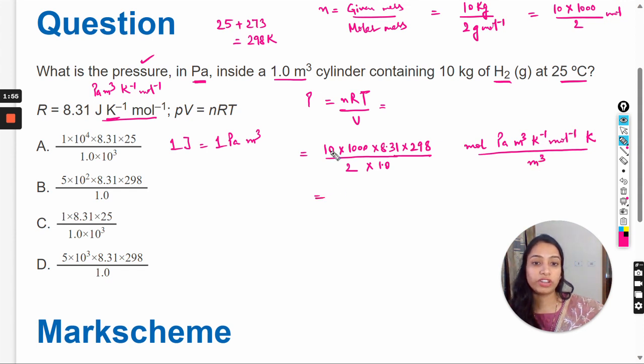So if we divide 10 by 2, it becomes 5 multiply 1000 multiply 8.31 multiply 298 divide by 1.0.